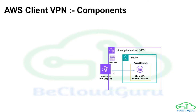We also have a route table, which contains the routing information to help your network traffic flow. When traffic comes from the client and hits the client endpoint, these route tables are copied to the client and let the client know which path the traffic will flow. Then we have authorization rules — by default all access is disabled, so you need to specifically allow access.